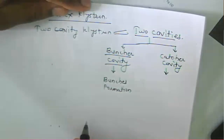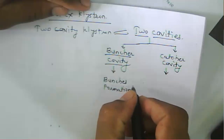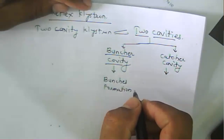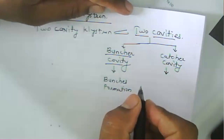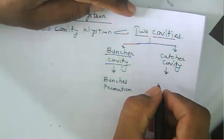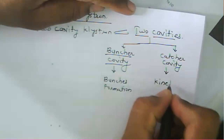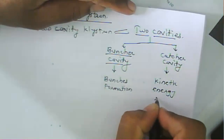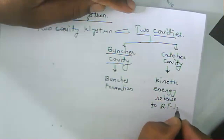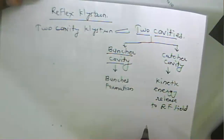In a catcher cavity, whatever bunches are there, they propagate — they have a velocity. Because they are moving faster due to acceleration and deceleration, they form the bunches. Once they form the bunches, they have kinetic energy, and that energy is released inside the catcher cavity. That kinetic energy releases to the RF field, and so we get an amplified output.